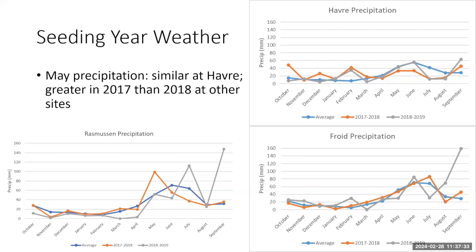Here is precipitation data from the two seeding years. The blue is the average of both years, the orange is the 2017 seeding year, and the gray is 2018. I want to focus on May precipitation because that's when vegetation will first be establishing — these were all frost-seeded. At Havre it was fairly similar between the two years, but at the other two sites there was greater precipitation in 2017 compared to 2018.